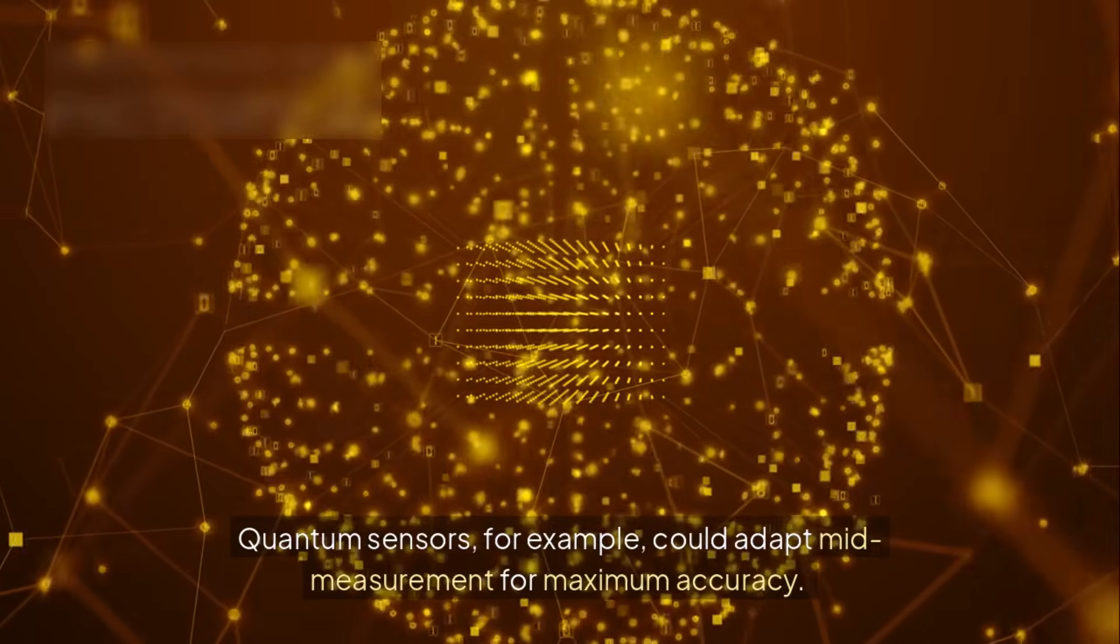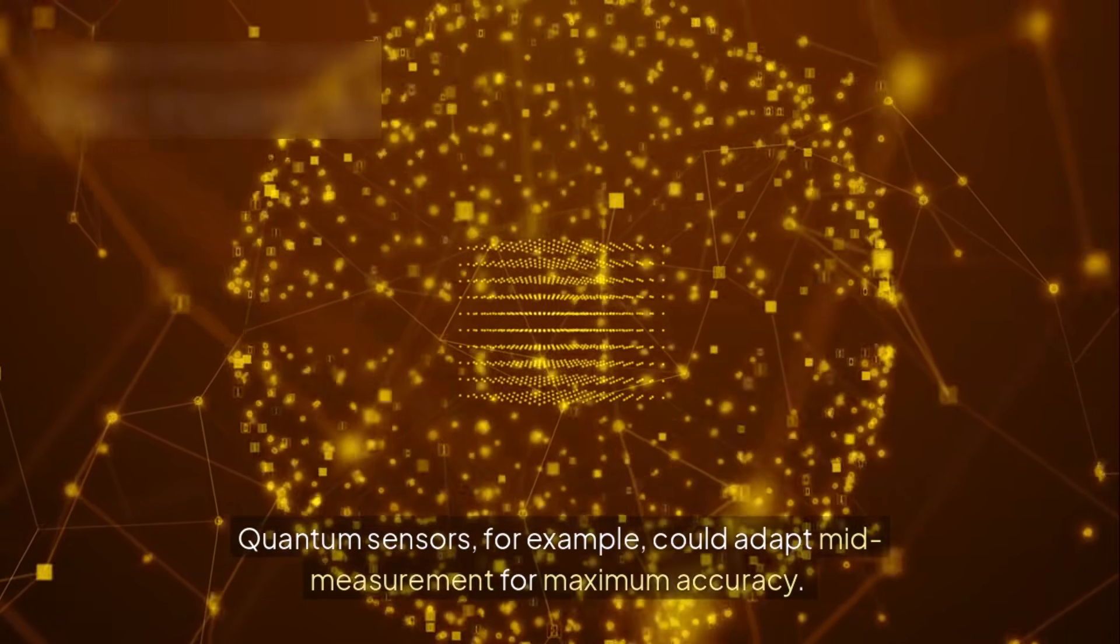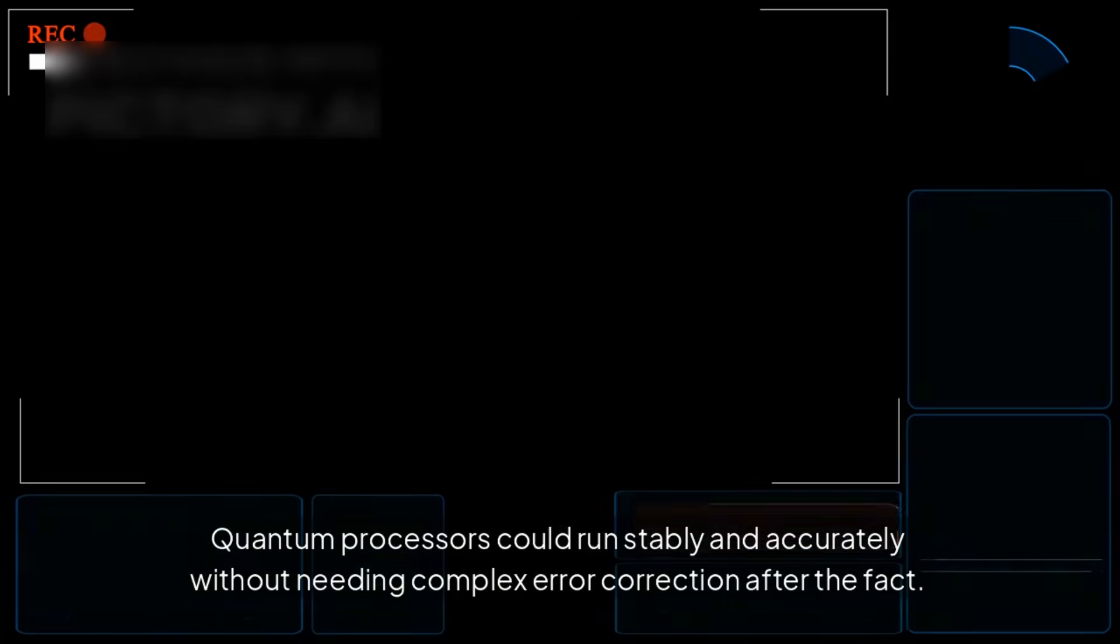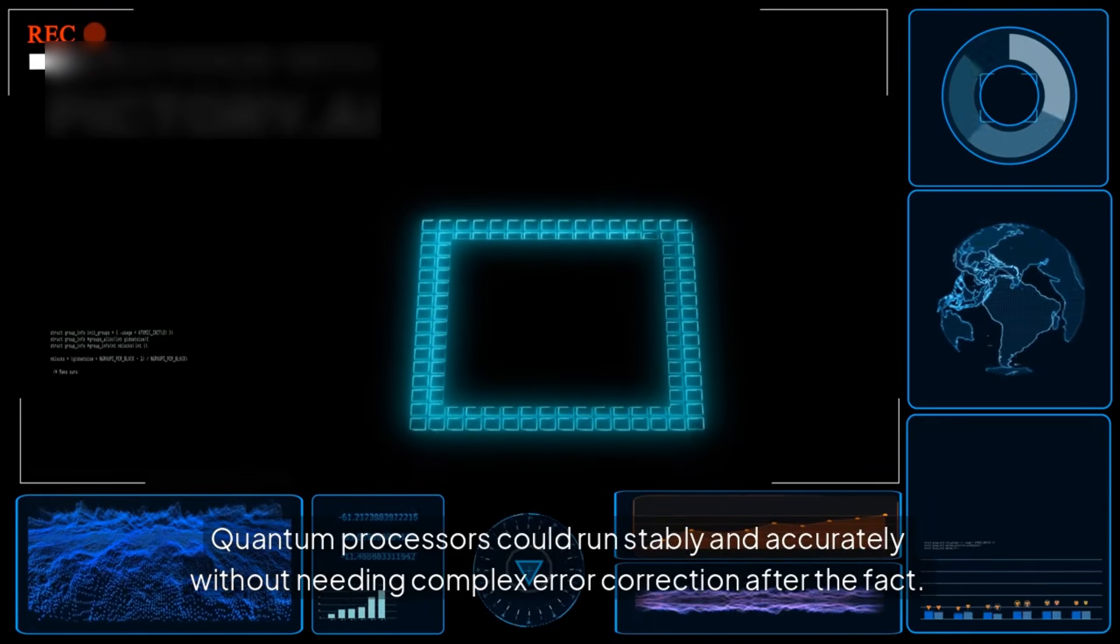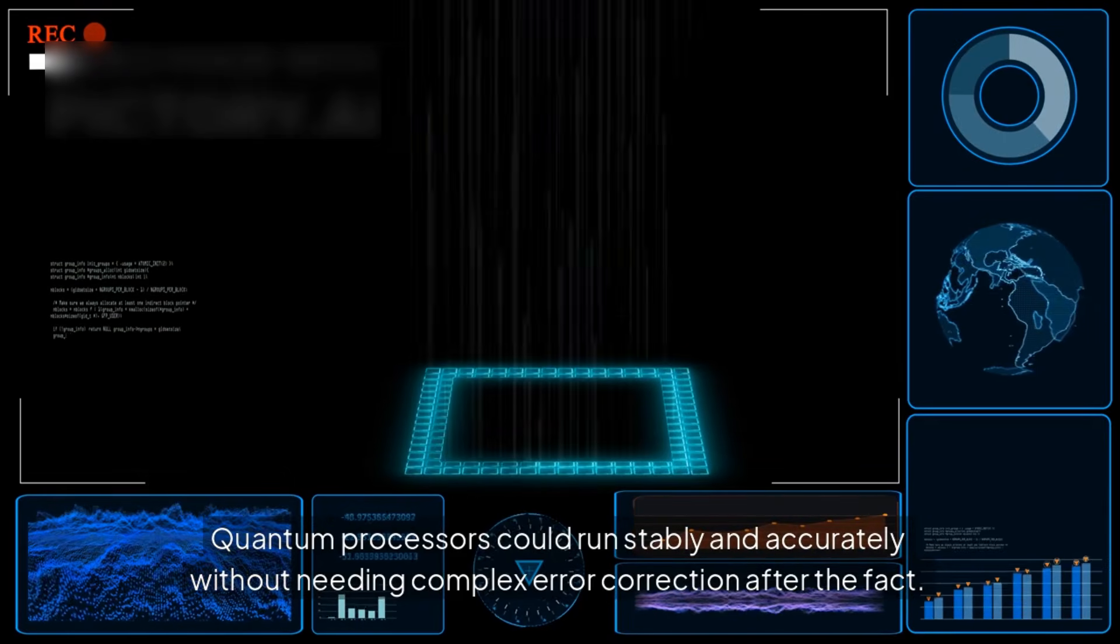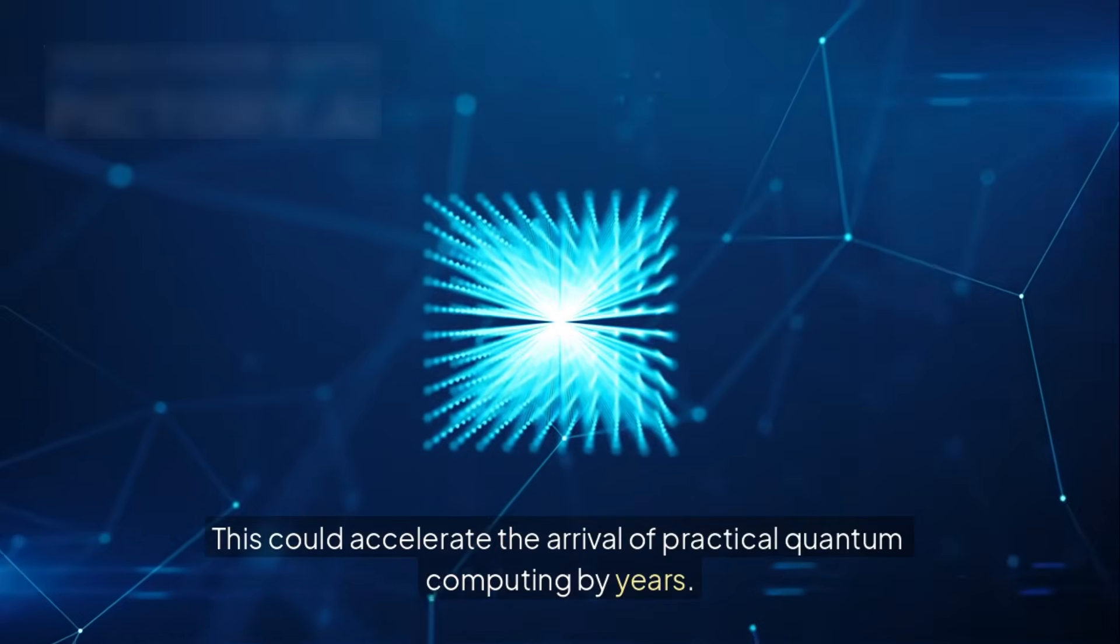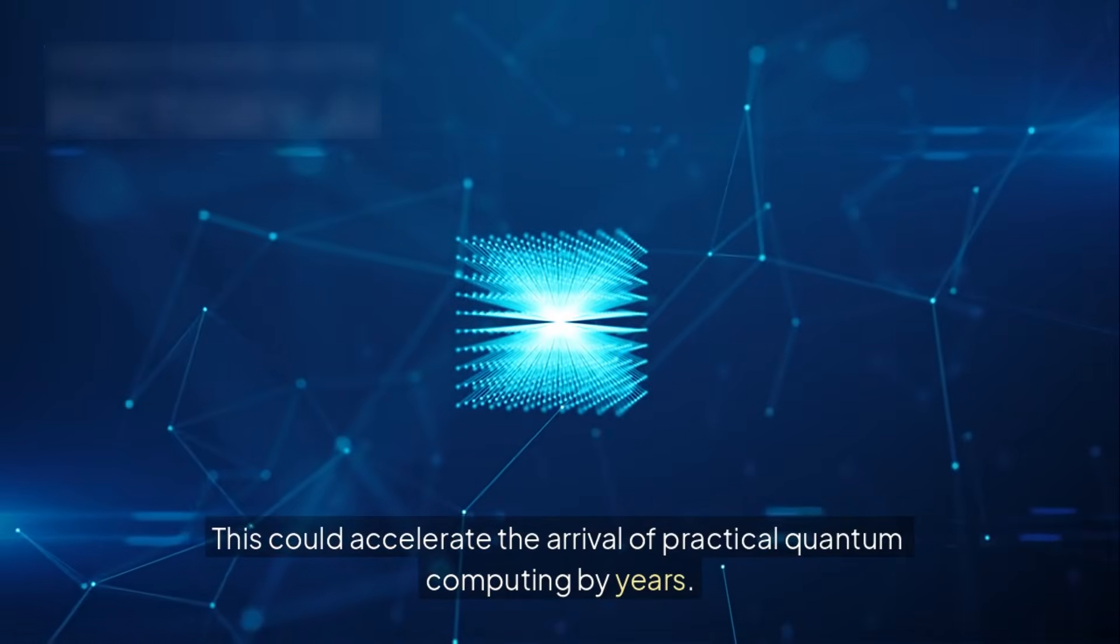Quantum sensors, for example, could adapt mid-measurement for maximum accuracy. Quantum processes could run stably and accurately without needing complex error correction after the fact. This could accelerate the arrival of practical quantum computing by years.